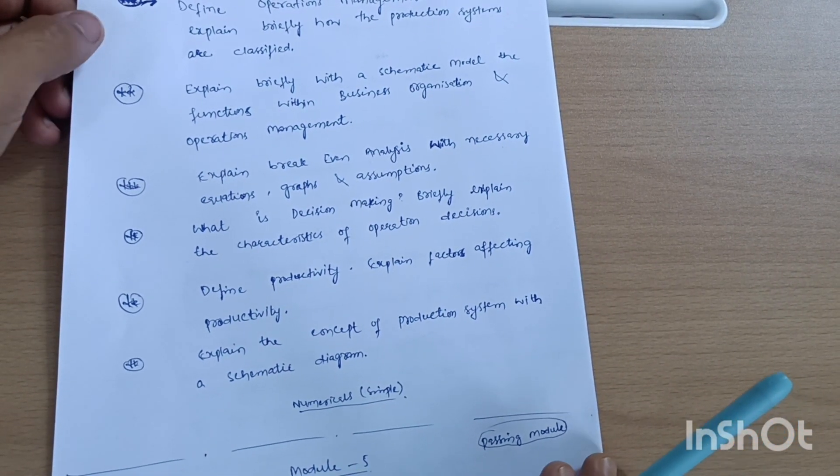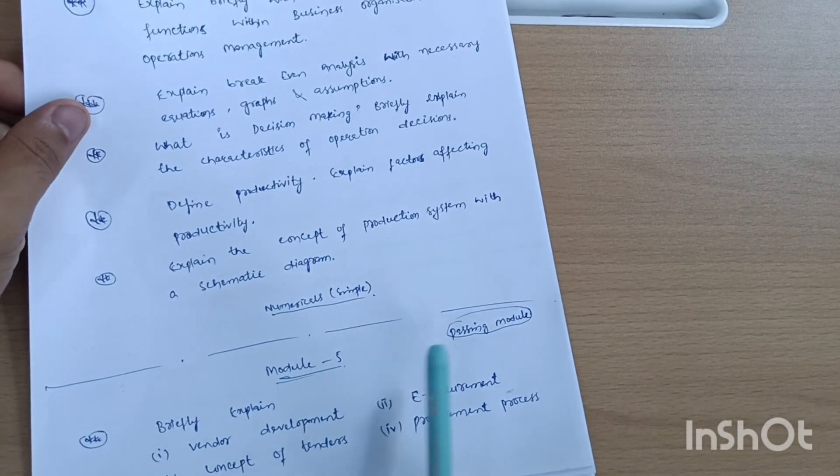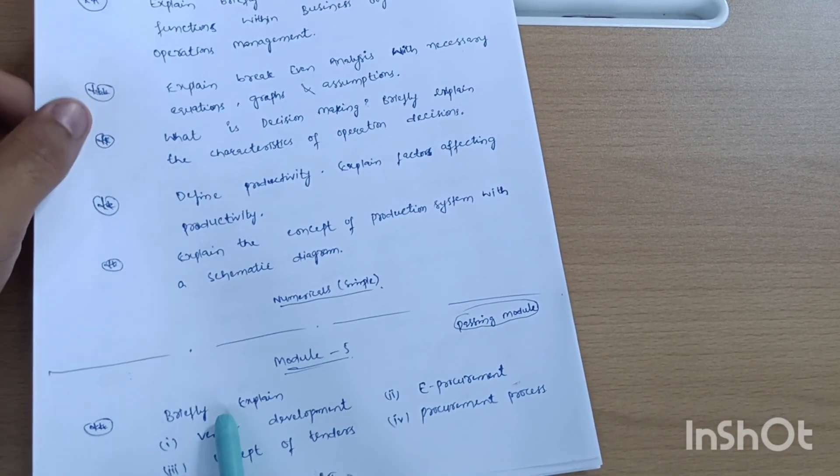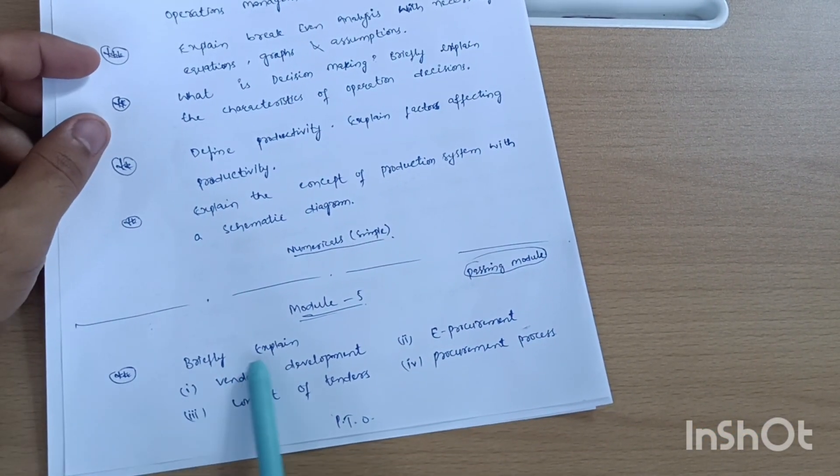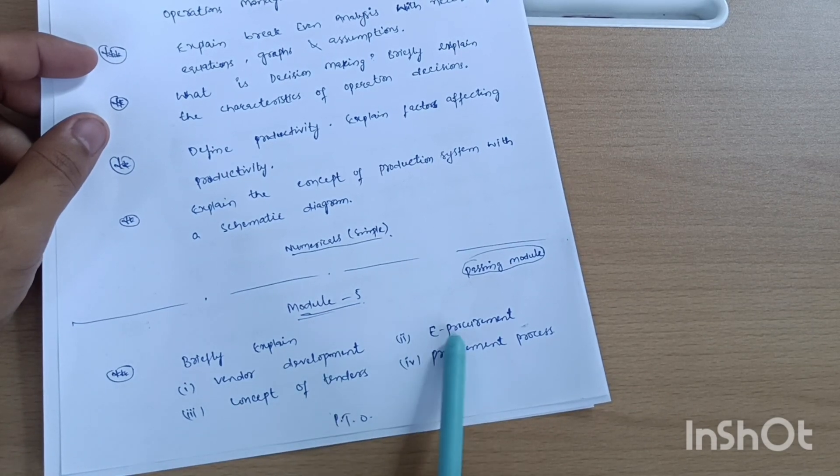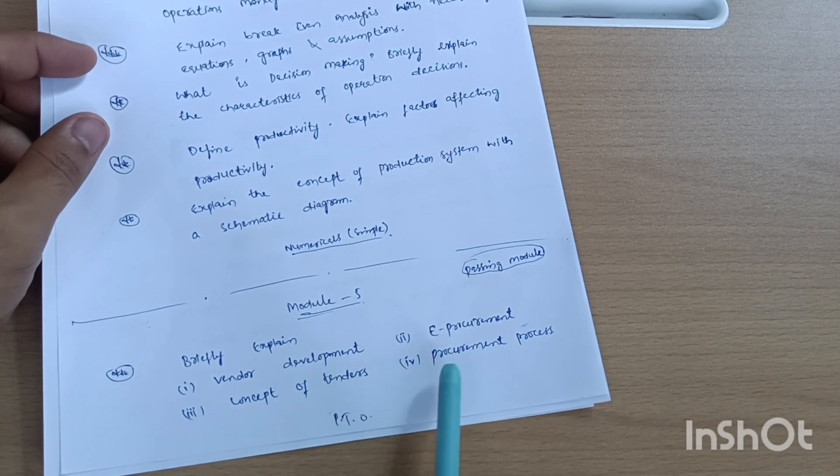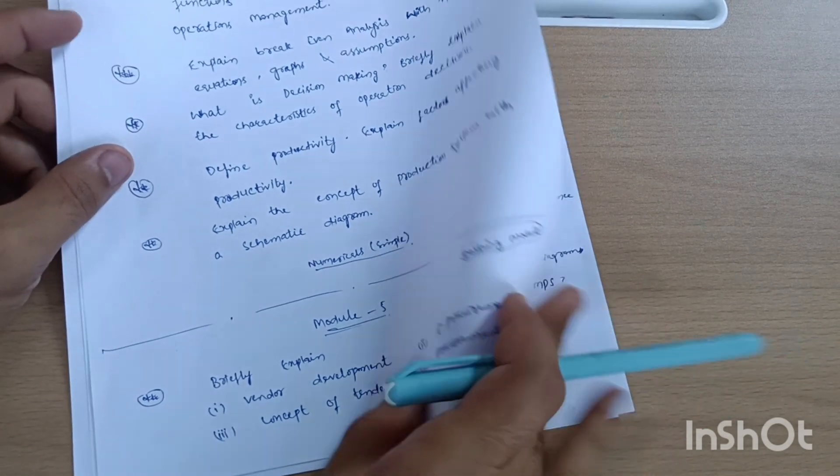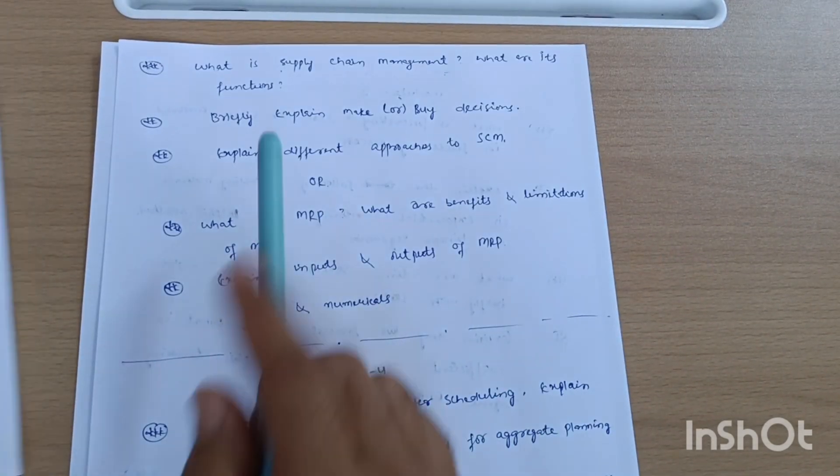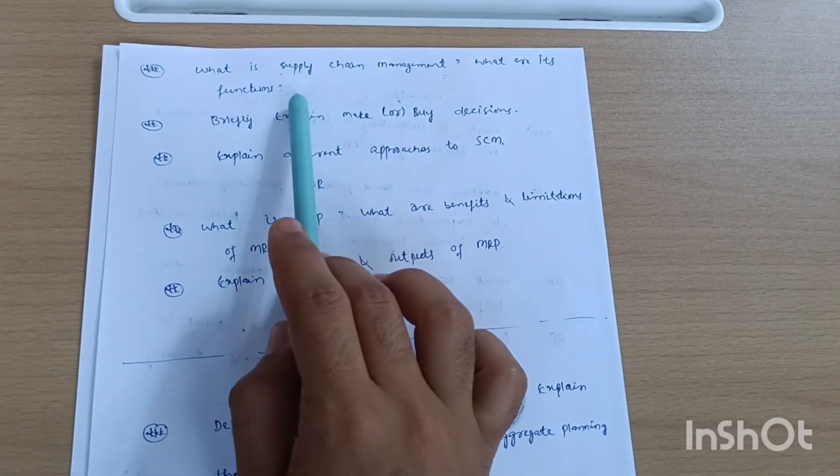Next is Module 5, that is also a passing module in which you have to cover theoretical questions like briefly explain vendor development, e-procurement, concept of tenders, and the procurement process. Next, what is supply chain management and what are its functions?